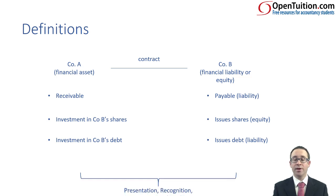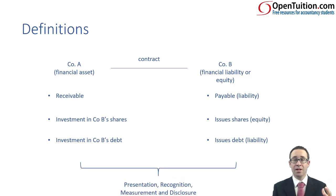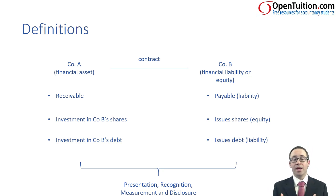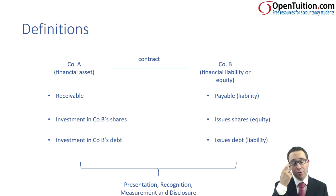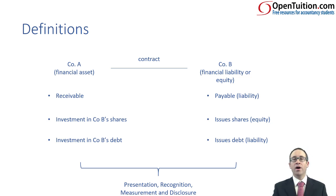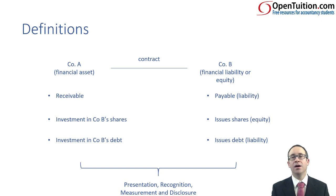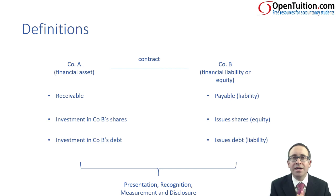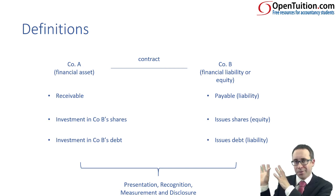We need to look at the presentation with regards to IAS 32. The recognition and measurement is covered by IFRS 9. The disclosure is covered by IFRS 7. Within there we've got various bits to do with impairment in IFRS 9. And if we get into really complex aspects such as derivatives — can those derivatives be used as part of hedging? Sounds too scary. We'll just keep it simple for the time being.